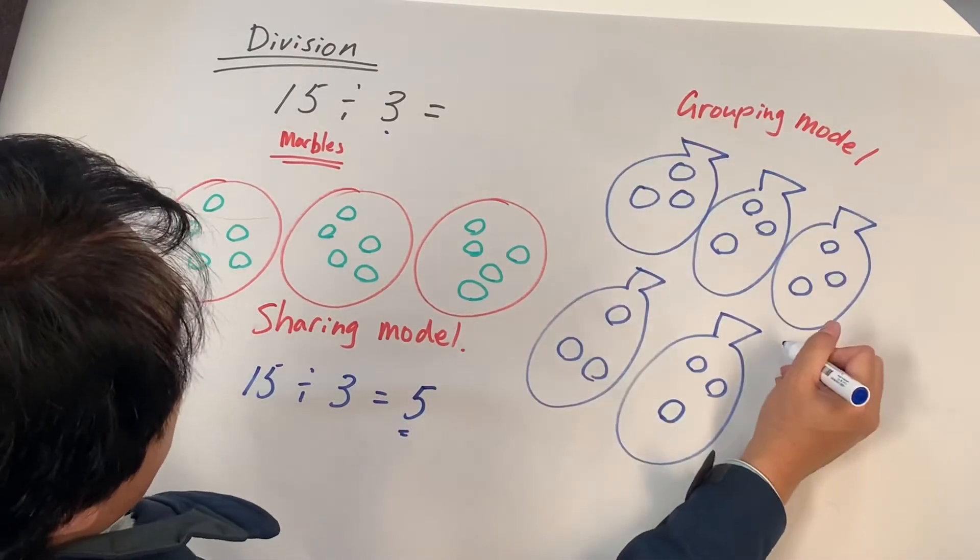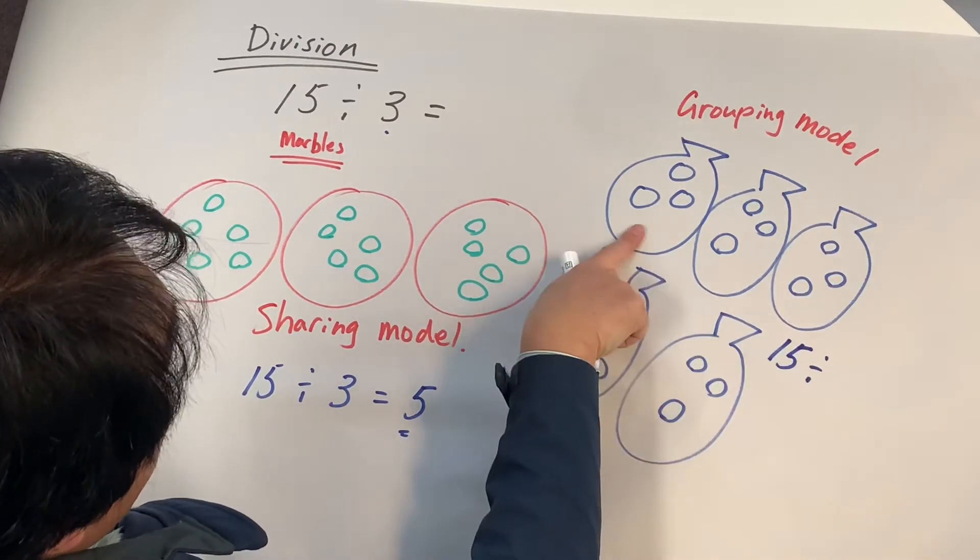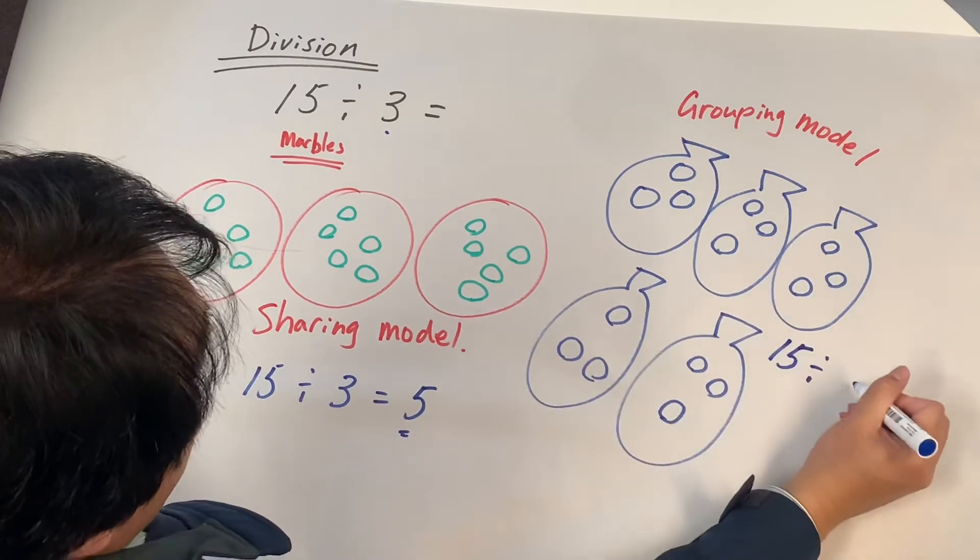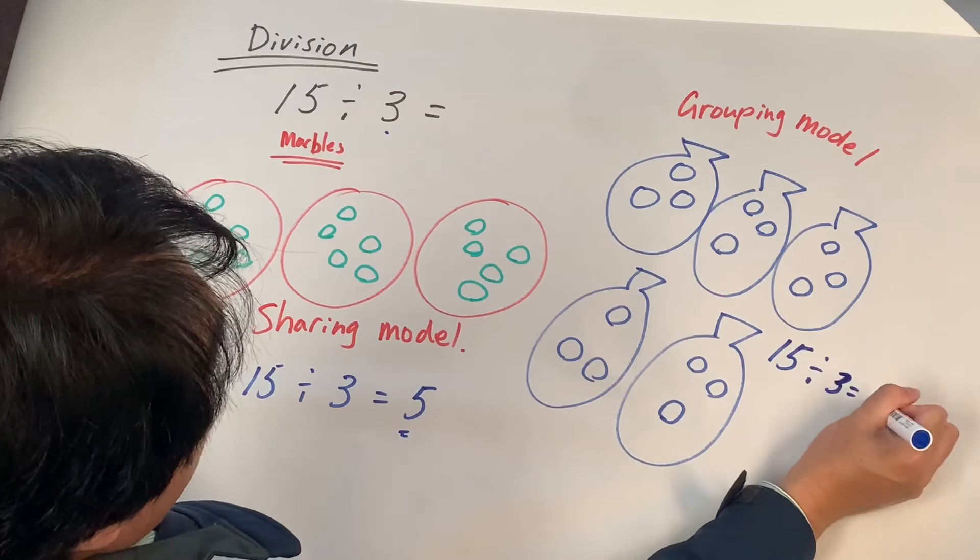Grouping model: There are 15 marbles and in each bag there are three marbles. I need five bags.